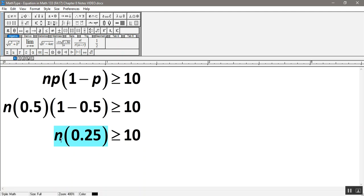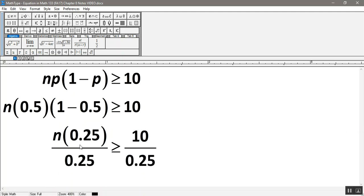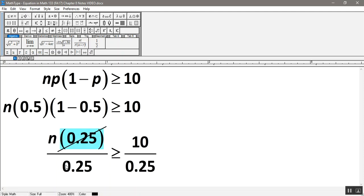So you divide both sides by 0.25. And of course, whatever you do to the left, you have to do to the right to keep it all fair. So I divide by 0.25. So I'm going to do it over here. Divide by 0.25. These are going to cancel over here, because 0.25 over 0.25 makes 1. So that's all gone.